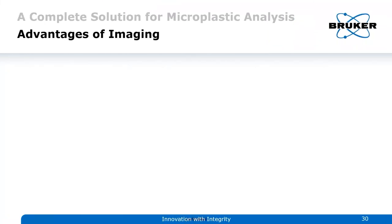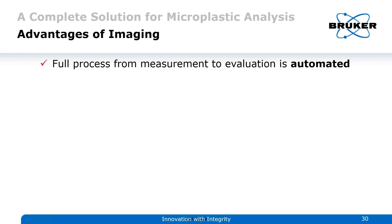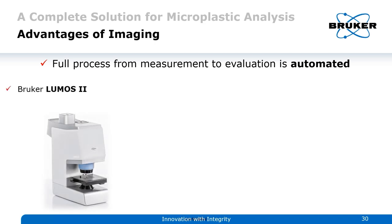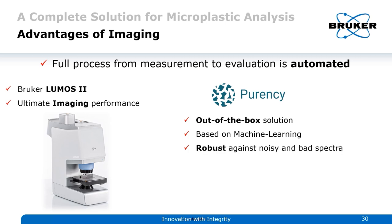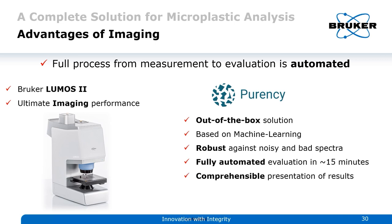To summarize the advantages of imaging: the full process from measurement to evaluation is automated. With the Bruker Lumos 2 you get ultimate imaging performance for best spectral data. With the Purency Microplastics Finder you get an out-of-the-box solution based on machine learning, very robust against noisy or bad spectra. Evaluation is fully automated and completed in only 15 minutes, with comprehensible results where you can always trace what the software has done — making it the ideal solution for routine analysis.